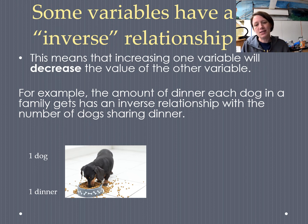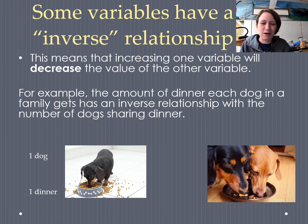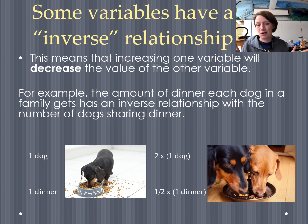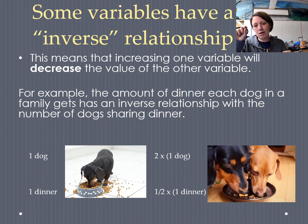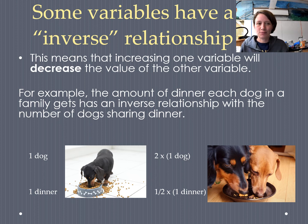But if we double the number of dogs in our family to two, how much dinner does each dog get — assuming we give them the same total amount of food? Doubling the dogs means each dog now only gets half as much dinner. So two times as many dogs, but one-half as much dinner per dog. One variable went up and the other variable went down — that's the inverse relationship.